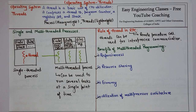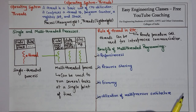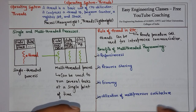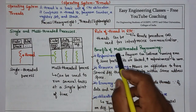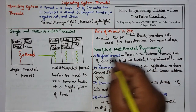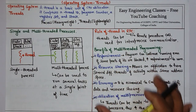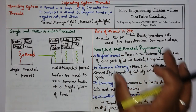In a multiprocessing system, threads can be made to run concurrently on different processors, which increases concurrency. A single threaded process can only run on one CPU no matter how many processors are available. By using multi-threaded programming we are actually utilizing the multiprocessor architecture effectively.